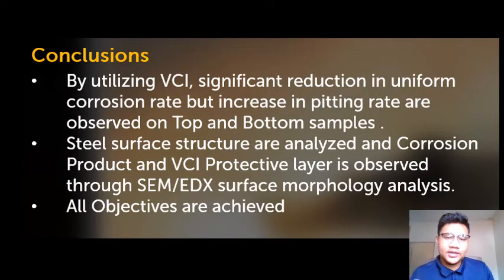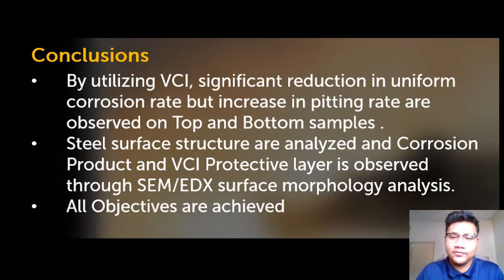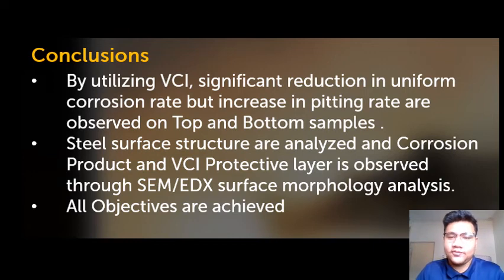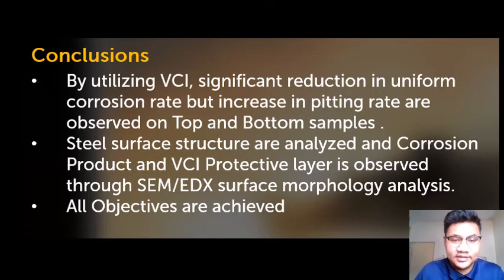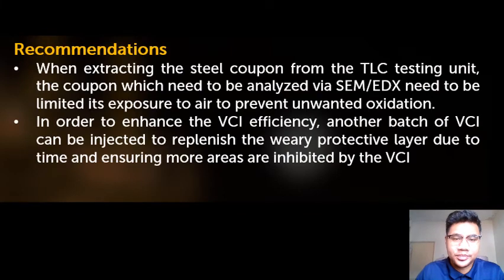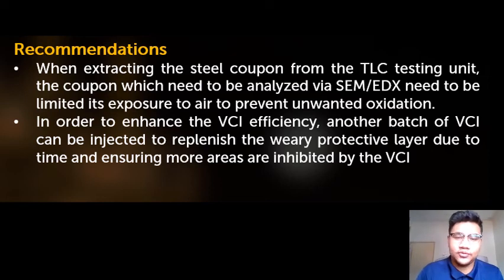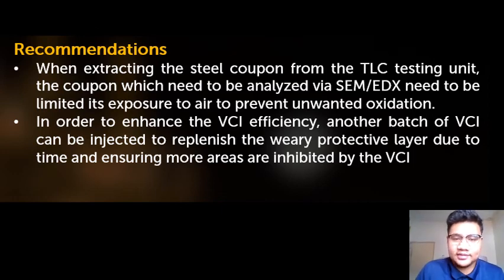As a conclusion, by utilizing VCI, a significant reduction in uniform corrosion rate can be observed for both top and bottom coupons for batch and pre-corroded experiments. Nevertheless, it is also observed that pitting rate increased significantly. Through SEM-EDX analysis, the presence of nitrogen and sulfur in the readings shows that VCI has established its protective layer on the steel surface. With that, all objectives are achieved. As a recommendation, to obtain more accurate SEM-EDX results, the coupon should minimize its exposure to air to reduce unwanted oxidation. Additionally, another batch of VCI can be injected to replenish the protective layer and ensure more areas are inhibited by the VCI.